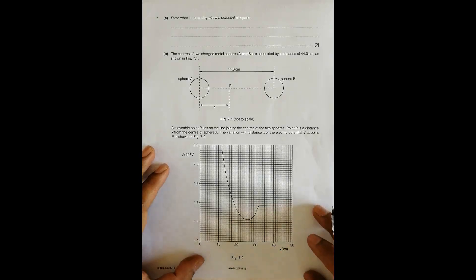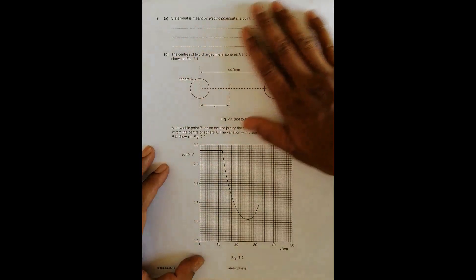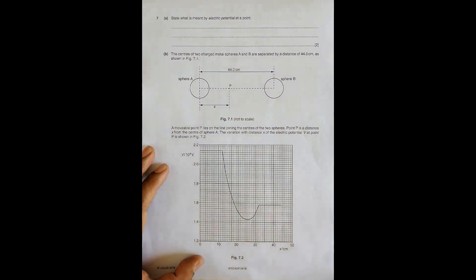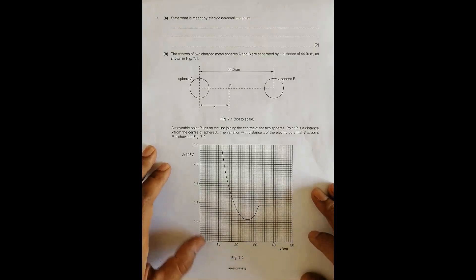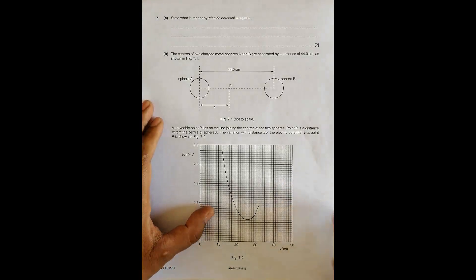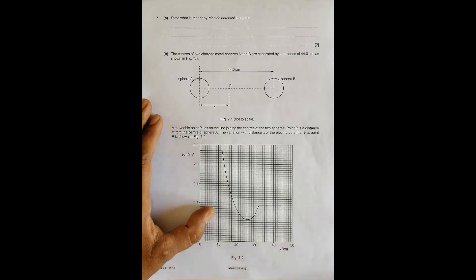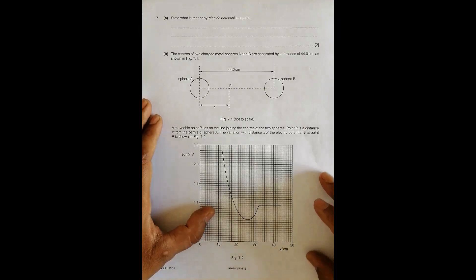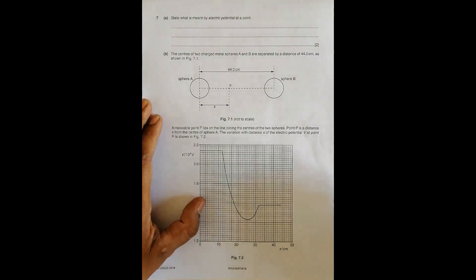Hello folks, this is the second question of the related field for this year's paper 4. This question belongs to 2018 February/March paper 4/2, question number 7. The first part requires us to define the meaning of electric potential: it is the amount of work required to bring a unit positive charge from infinity to that specified point within the electric field.